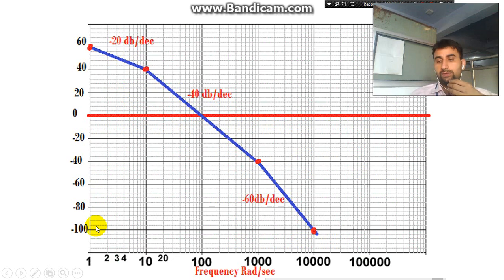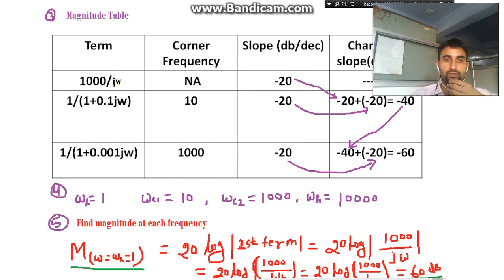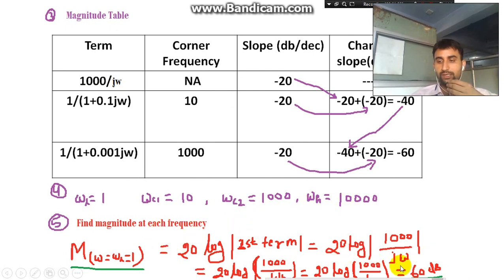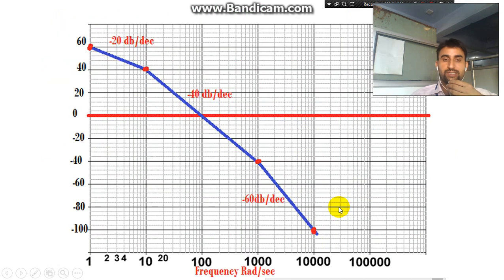Now we have four frequencies: omega_L is equal to 1, omega_C1 is equal to 10, omega_C2 is equal to 1000, and omega_H is equal to 10,000. The corresponding magnitudes are: at omega_L equal to 60 dB, at omega_C1 equal to 40 dB, at omega_C2 equal to minus 40 dB, and at omega_H equal to minus 100 dB. Let's put all these values into the graph.